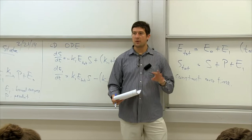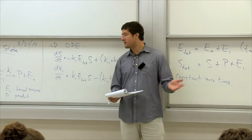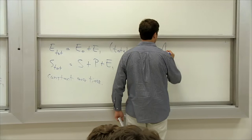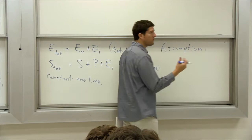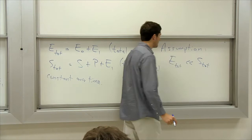So we reached this two-dimensional system. Today we're going to analyze this thoroughly and show how the system behaves over time. But we're going to make another assumption that is very important: E_tot is much less than S_tot.